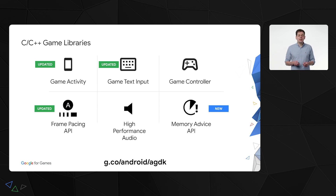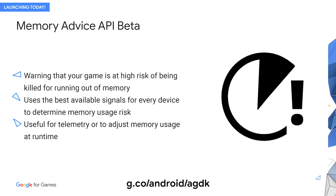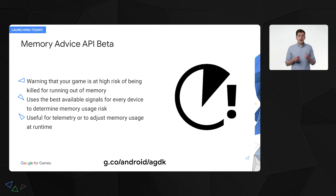As well as these updates, we're introducing a new library today: the Memory Advice API. When a game uses too much memory, the low memory killer will sometimes kill the app — this is a bad experience for the player, as it seems just like a crash, and there's often no telemetry or signal about what happened. To solve this, the Memory Advice API uses an ML model to combine the best signals for a given device to determine how close the device is to being low memory killed. You can use it as a drop-in replacement for on-trim memory, but it is much more accurate. You can also use it for telemetry — to record when a device is approaching a low memory kill and then tune your game or content on those devices to lower the risk in future. This library is available now and is part of the AGDK libraries package.